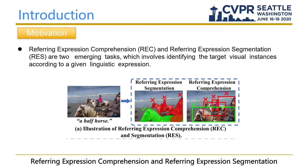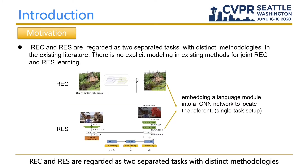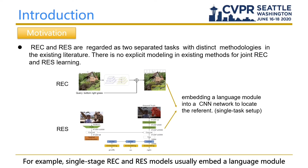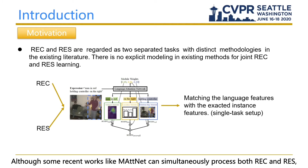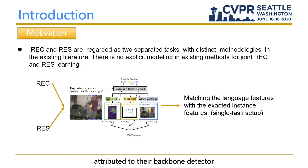Referring Expression Comprehension and Referring Expression Segmentation aim to locate the target visual instances according to a given expression. REC and RIS are regarded as two separated tasks with distinct methodologies in existing literature. For example, single-stage REC and RIS models usually embed a language module into a one-stage segmentation or detection network. Although some recent works like MATTNet can process both REC and RIS, they are still under single-task setups and their multi-task functionality is largely attributed to their backbone detector.